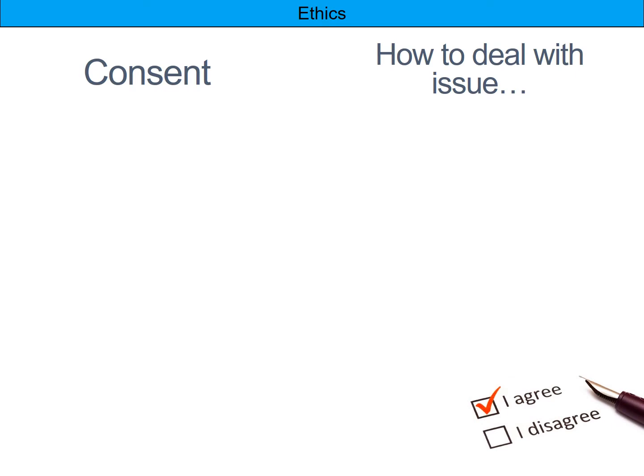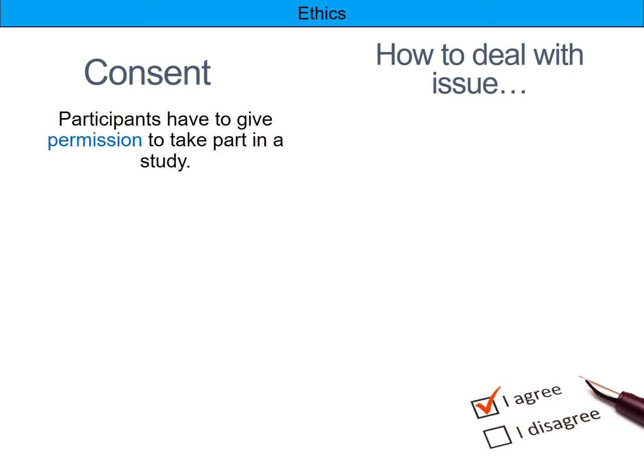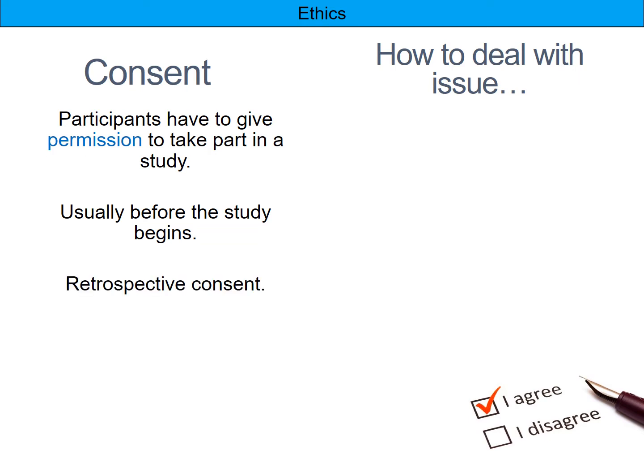First, consent. Participants have to give permission to take part in your study. They have to say they are willing and must be free to do so — not coerced. This is usually before the study begins, typically using a consent form. However, in specific circumstances where you can't ask beforehand, you can ask for retrospective consent, speaking to them afterwards about their tasks and possibly their results.